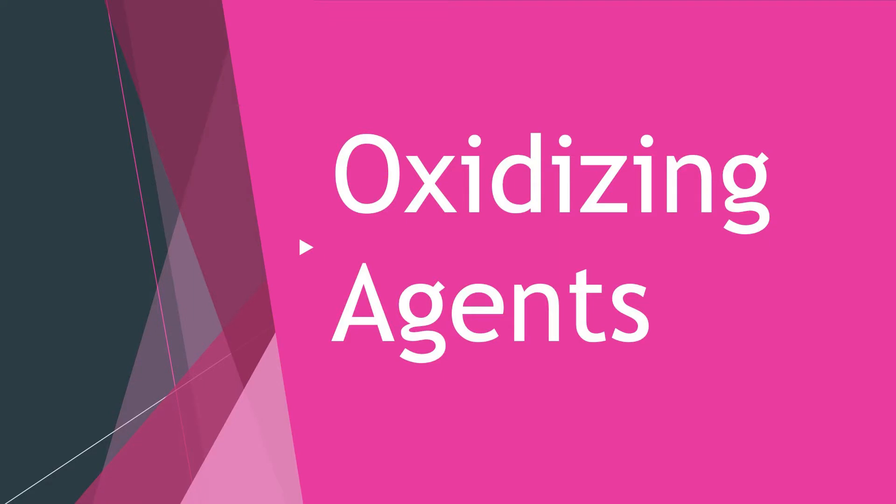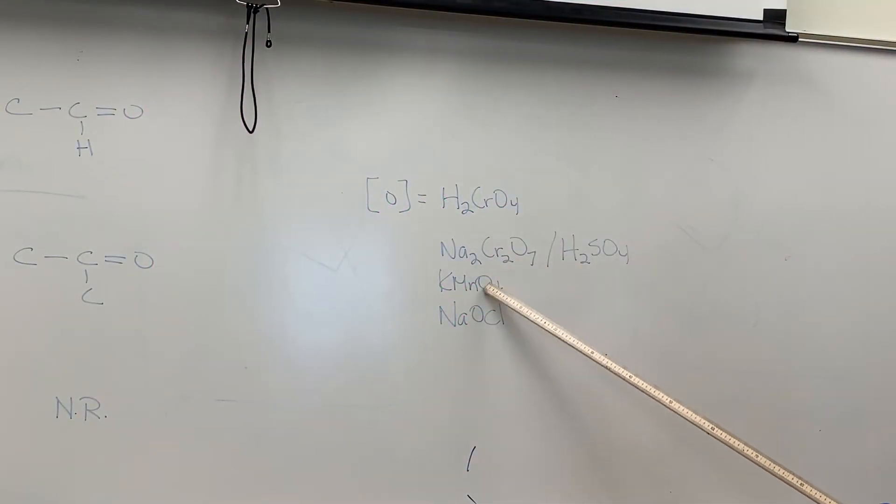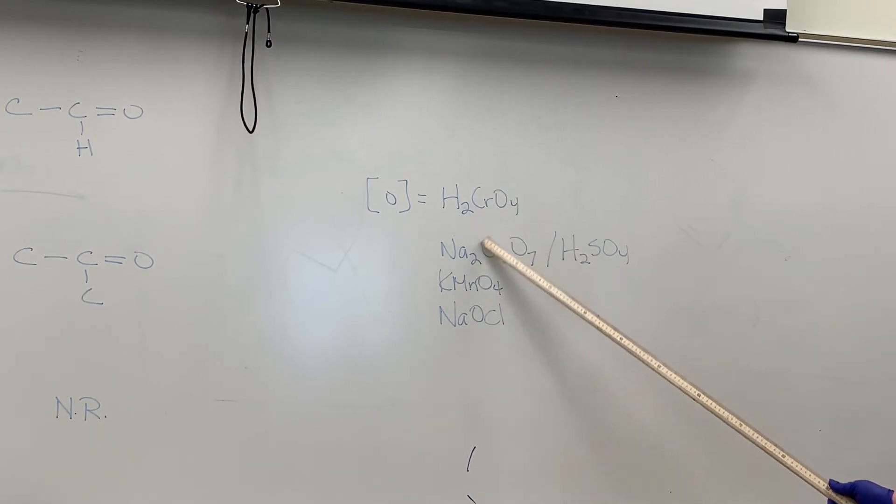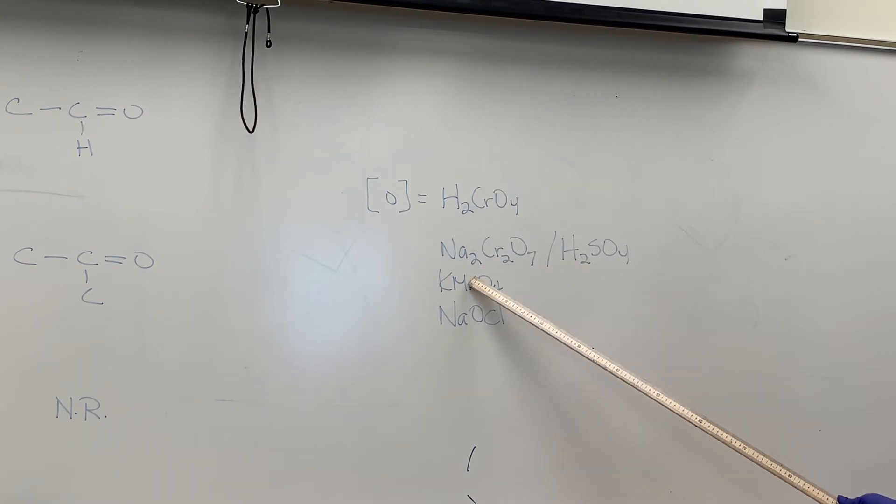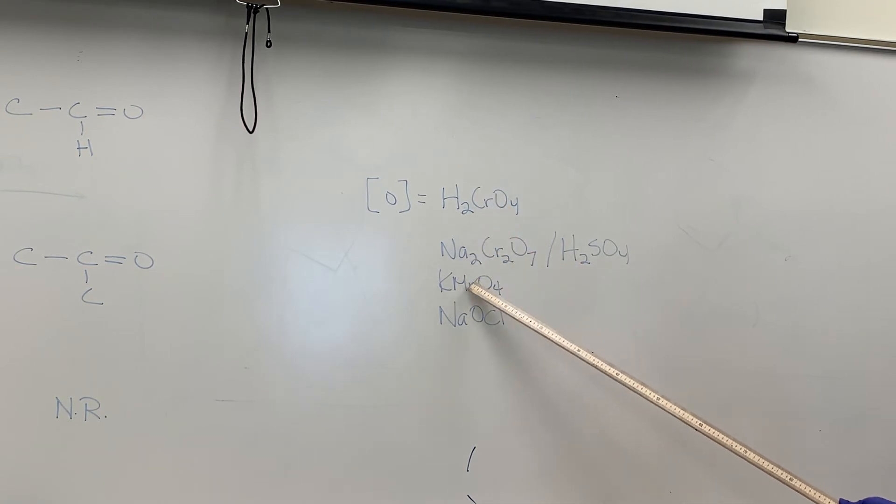The oxidizing agent we're going to use today is sodium hypochlorite, which is what is in bleach. But just to go over some of these others: chromic acid, sodium dichromate, sulfuric acid, potassium permanganate—usually you have to heat potassium for oxidation to proceed. But all of these are very strong oxidizers. The other thing that's associated with these is they contain heavy metals like chromium and manganese.